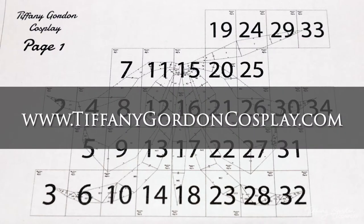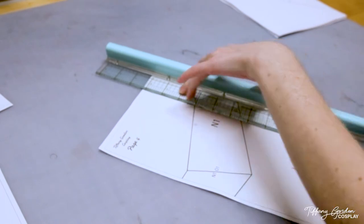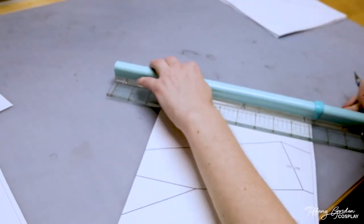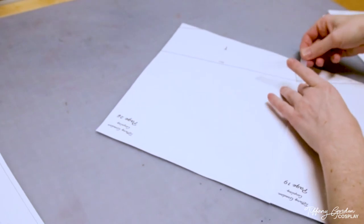To start off making this tail, I have a two scale blueprint available on my website at tiffanygordoncosplay.com or see the link below. Once you've printed off all the sheets for this blueprint, you will need to trim off the edges where the box is indicated and then tape each of the pieces together.